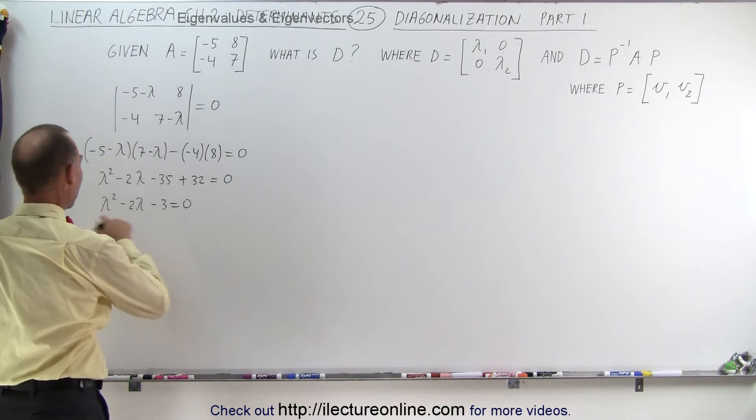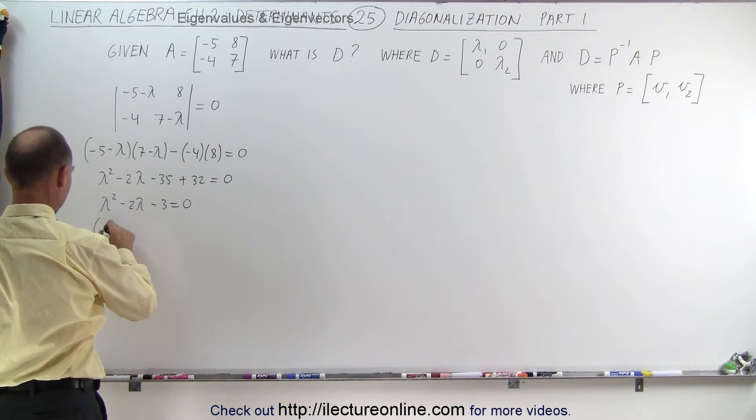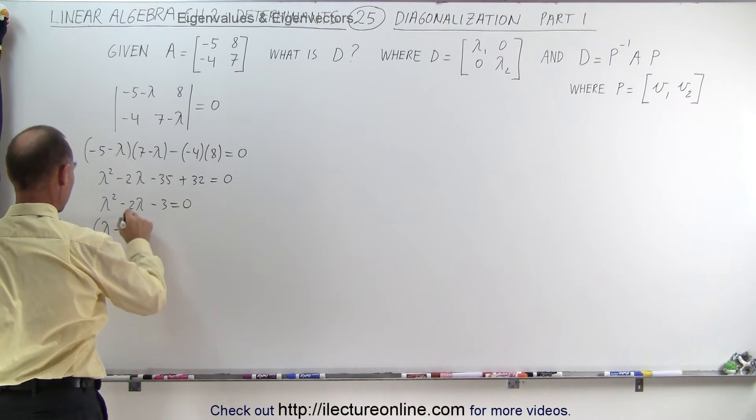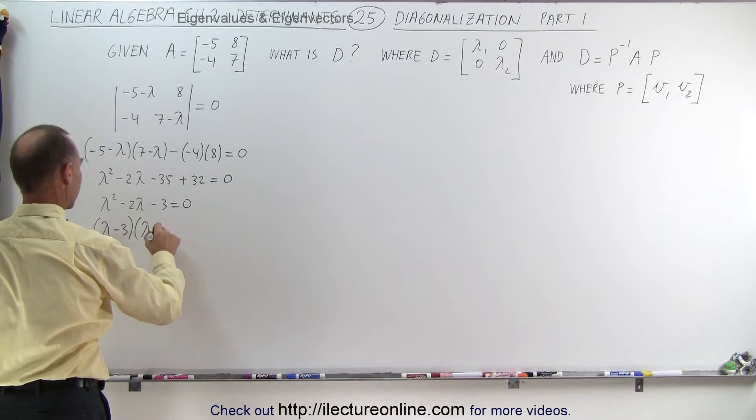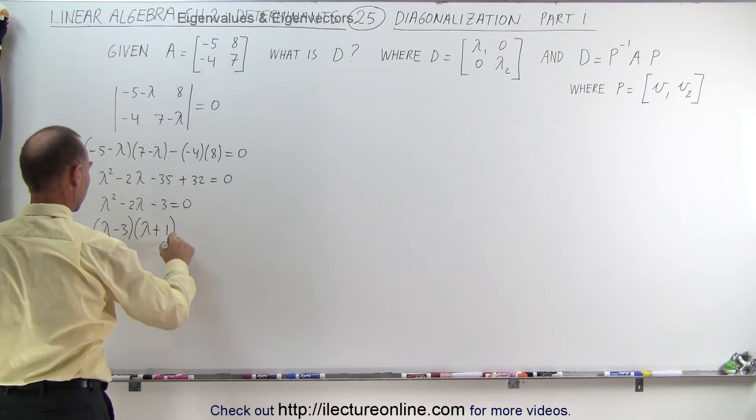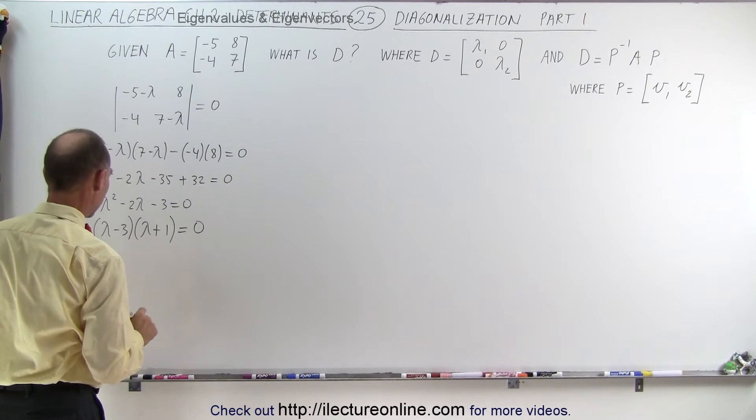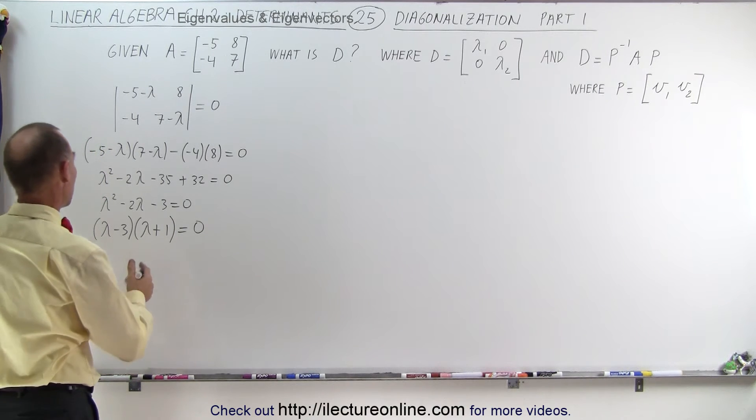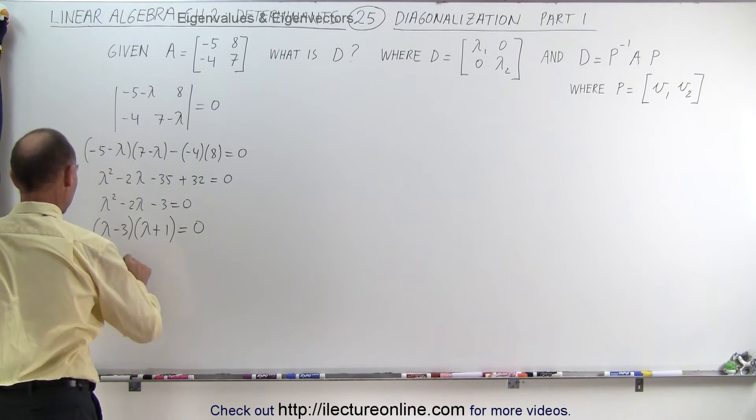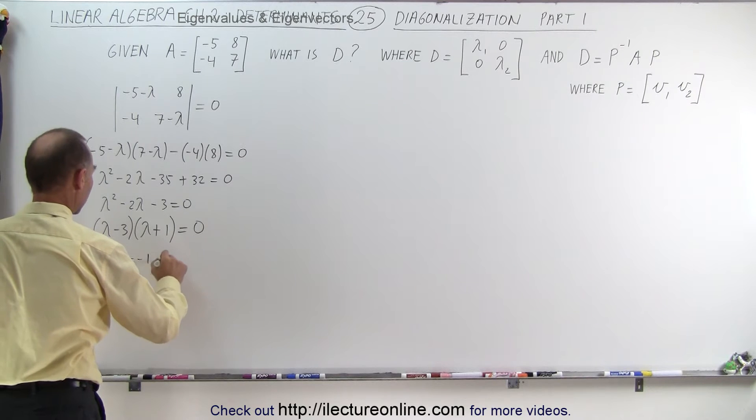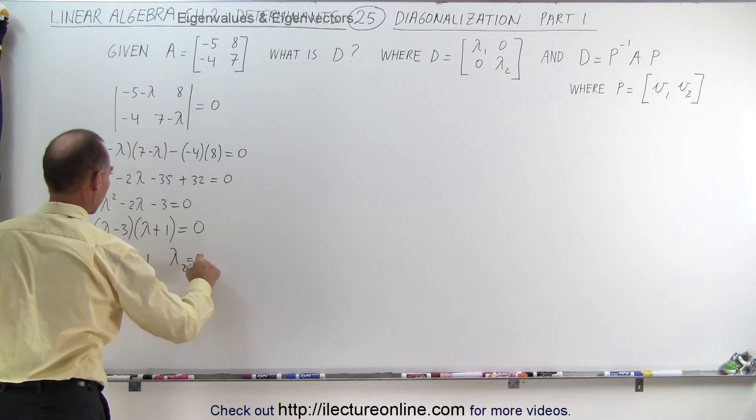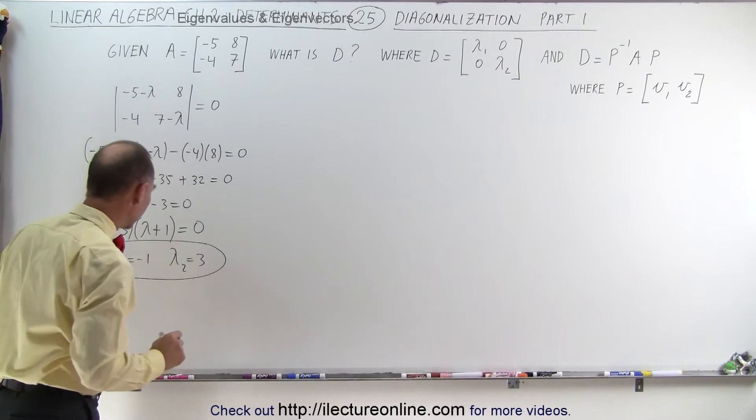Factoring this we get lambda minus 3, lambda plus 1 equals 0. And that means that we have two eigenvalues. We can say that lambda sub 1 equals minus 1 and lambda sub 2 equals 3. Those are our two eigenvalues.